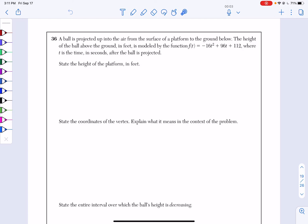A ball is projected up into the air from a surface of a platform to the ground below. The height of the ball above the ground in feet is modeled by the function f(t) = -16t² + 96t + 112, where t is the time in seconds after the ball is projected.